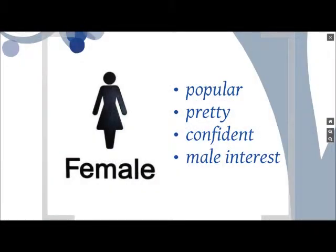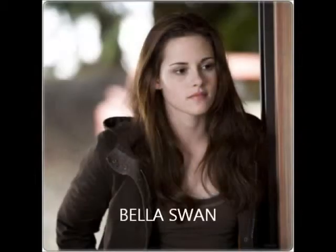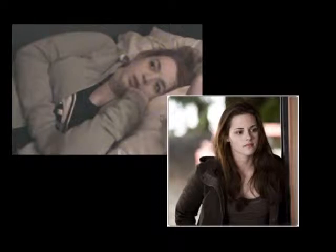In a romance film a stereotypical female is usually popular, pretty and confident, and does stereotypically girly things such as going shopping, wearing lots of makeup and fashionable brightly coloured clothes. She would often have a male interest. The female character in my film opening is called Kate Stenner. She subverts the audience's expectations of a female character, much like the character of Bella Swan in Twilight. Neither of them are dressed in high fashion clothes and they wear dark colours. Kate is wearing a grey hoodie in my film opening. The colour grey usually connotes dullness and boredom, however it is also an industrial colour connoting security and reliability.